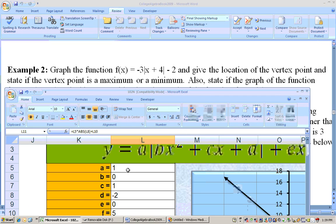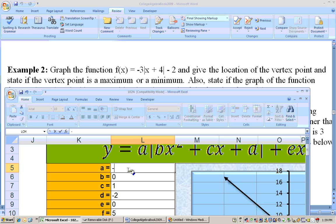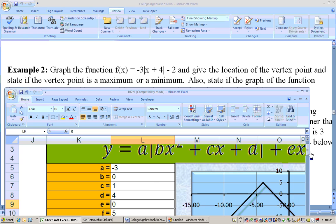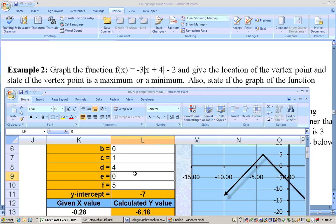So, the a would be negative 3, actually, in this case. The b would be 0 because there's nothing squared on this problem. The c would be 1. That's the number in front of the x. The d would be 4. The e is any term with an x outside of the absolute value, and there isn't any. And then, finally, the constant is negative 2. So, let's put that in there. Negative 2.